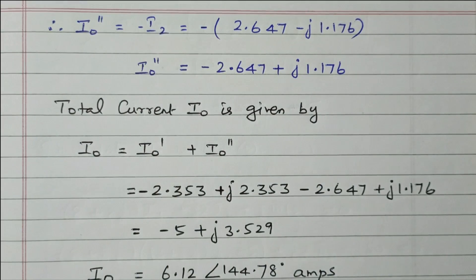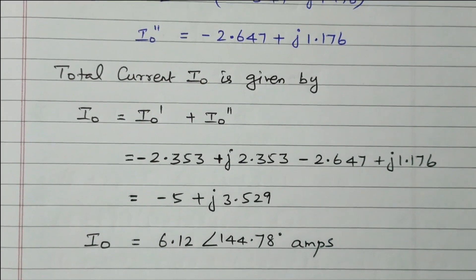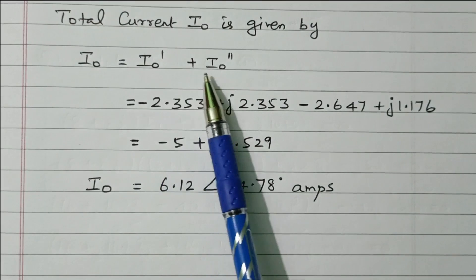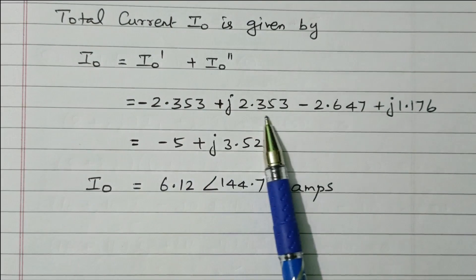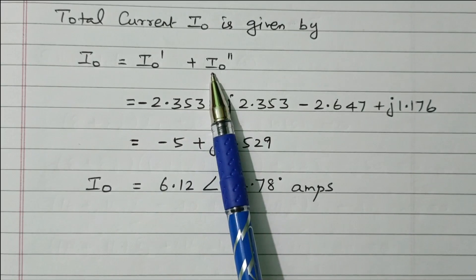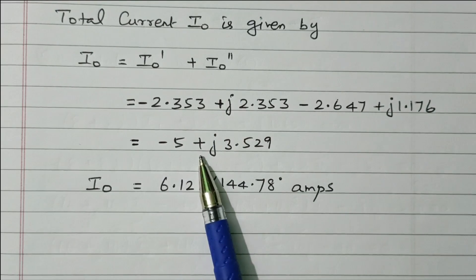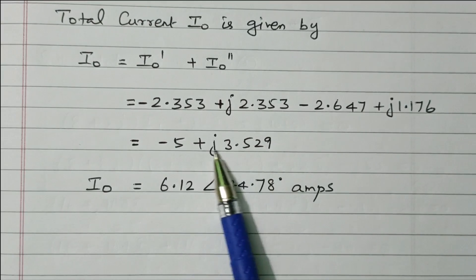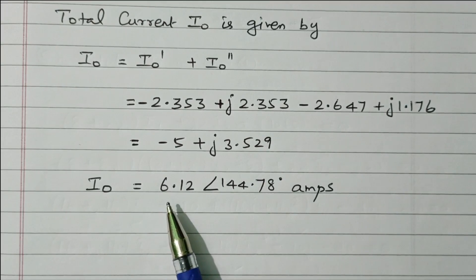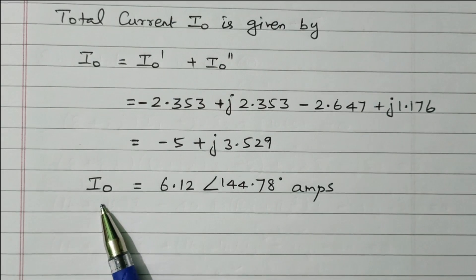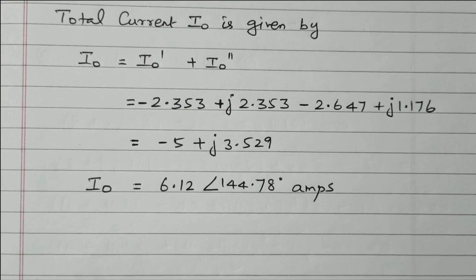The total current I₀ equals I₀ dash plus I₀ double dash. Adding (−2.353 + j2.353) and (−2.647 + j1.176) gives −5 + j3.529 in rectangular form. Converting to polar form: I₀ = 6.12 amperes at an angle of 144.78°.